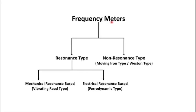To measure frequency, we need a meter, and in basic terms the meters are classified as those which use the principle of resonance and those which do not. The one which doesn't use resonance is known as moving iron type or Western type. The resonance-based ones are further classified into mechanical resonance based, known as vibrating reed type, and electrical resonance based, known as ferrodynamic or electrodynamometer type.